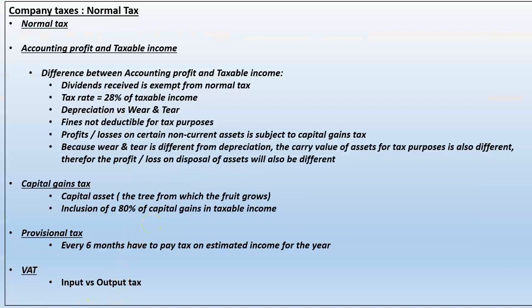Let's talk a little bit about income tax, which is what we call normal tax. Normal tax is the tax that a company has to pay on its profits made in the year. There is a difference between accounting profits — which is income less expenses — and taxable income. Taxable income is the amount we have to calculate in order to determine our tax liability for the year.